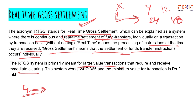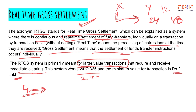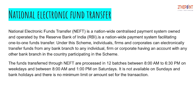RTGS system is primarily meant for large value transactions that require and receive immediate clearing. Iski availability hai 365 din, 24x7. Minimum transaction value hai 2 lakh rupaye — isse kam agar real-time basis pe settlement karni ho toh RTGS suitable option nahi hai. 2 lakh se kam ke transactions ke liye ek aur mechanism hai jise hum aage padhenge.